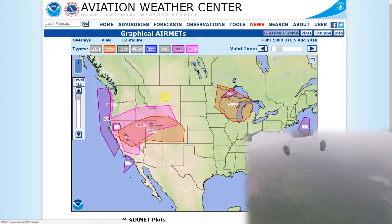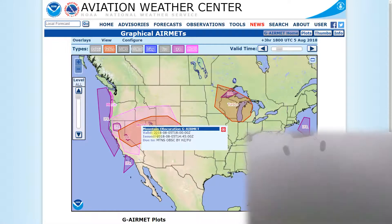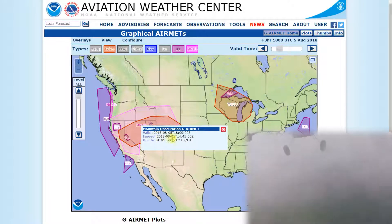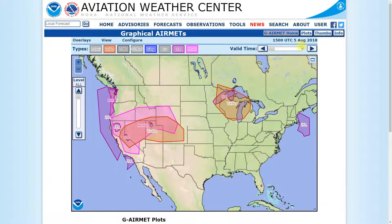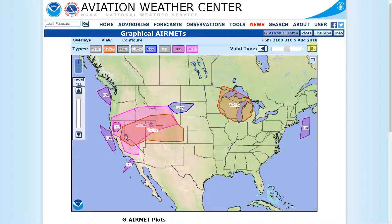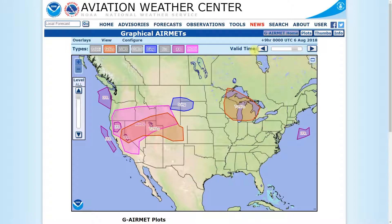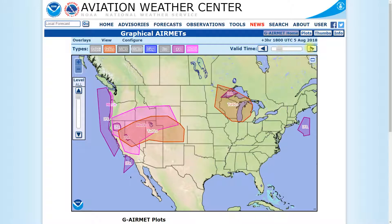Let's take an example here of this mountain obscuration. We click on it and it tells us exactly what's going on — there's mountain obscuration due to haze and smoke. It was issued at 1445 Zulu and becomes valid at 1800 Zulu. If we click up here to the valid times, we can actually change what's depicted to us, because as we look further out in the future, the weather is obviously changing.